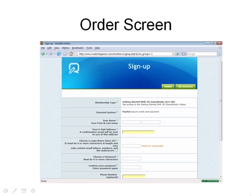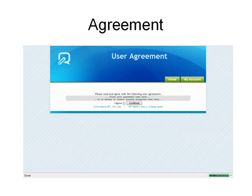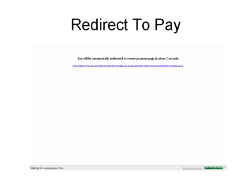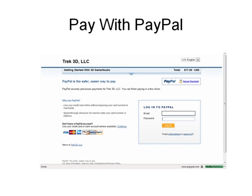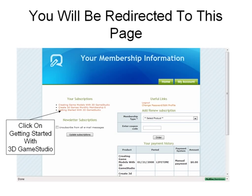Purchasing the tutorials: here's the order screen that you see whenever you click on the buy now button. All you have to do is fill out the order screen with your information, then click 'I agree and continue' on the agreement screen. You'll then be redirected to PayPal — log in or pay with a credit card if you don't have a PayPal account — and you'll be redirected to your membership information page.